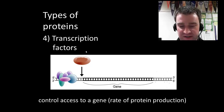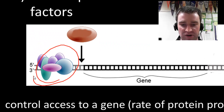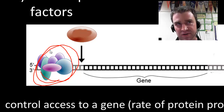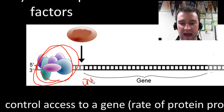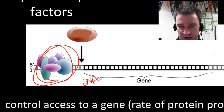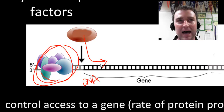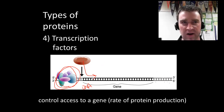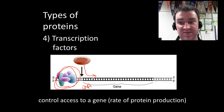A fourth type of protein is the transcription factor — they're all shown right here. Transcription factors have particular shapes to bind to particular DNA regions, and what they effectively do is control how often another protein can come in and copy that DNA in order to eventually make a protein. Transcription factors control the rate of production of other proteins.